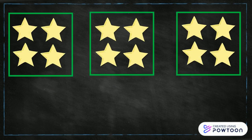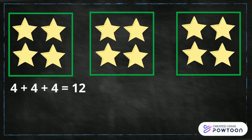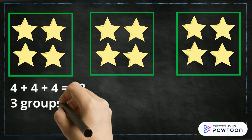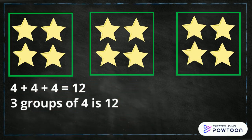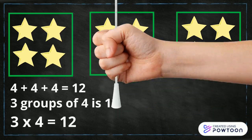So you can do the same sum in different ways. You can draw a picture showing how many groups and how many are in each group. You can write your addition sum such as 4 plus 4 plus 4 equals 12. You can do your groups of sum: 3 groups of 4 is 12. And you can do your multiplication sum: 3 times 4 equals 12.